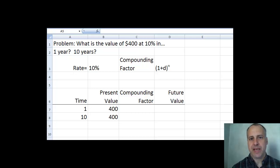Now we're going to do a simple example of a compounding problem. What we want to do is consider what is the value of $400 at 10% interest in one year and again in 10 years.